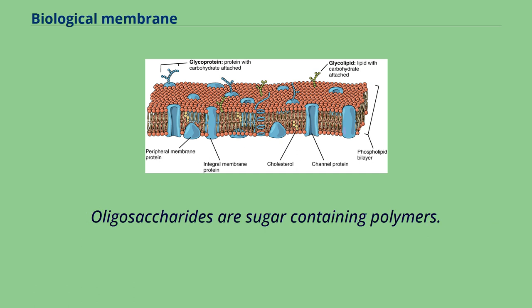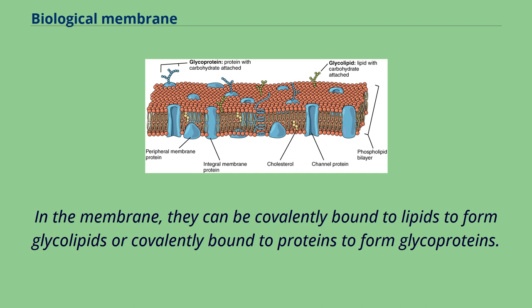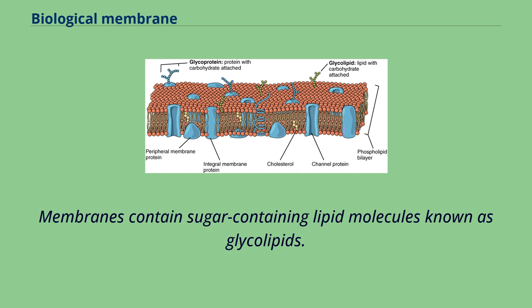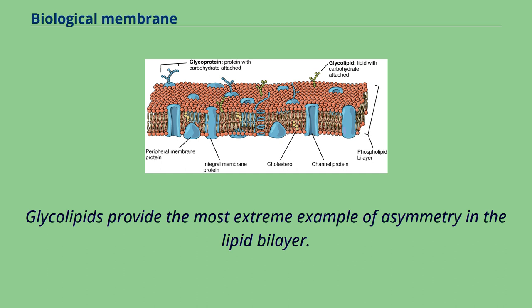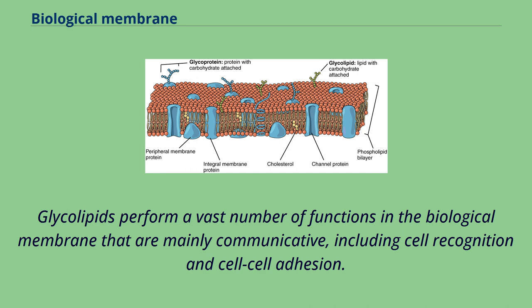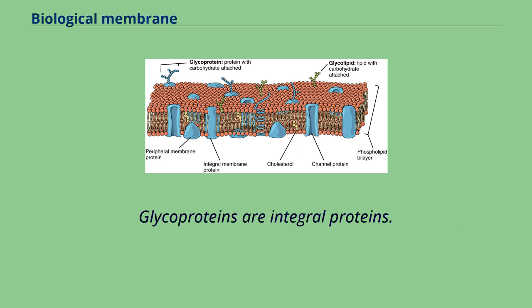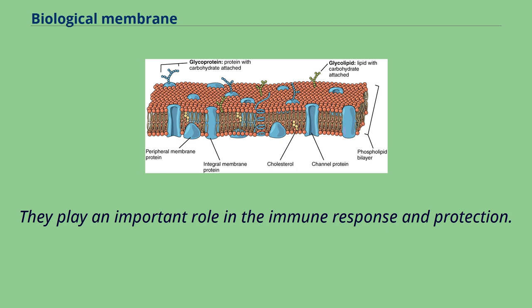Oligosaccharides are sugar-containing polymers in the membrane that can be covalently bound to lipids to form glycolipids or to proteins to form glycoproteins. In the bilayer, the sugar groups of glycolipids are exposed at the cell surface, where they can form hydrogen bonds. Glycolipids provide the most extreme example of asymmetry in the lipid bilayer. They perform a vast number of communicative functions, including cell recognition and cell-cell adhesion. Glycoproteins are integral proteins that play an important role in the immune response and protection.